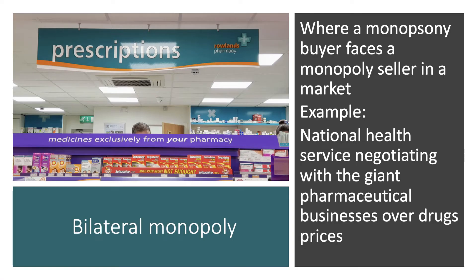First up, bilateral monopoly. This is where you have a monopsony firm — a firm with buying power in the market — facing up to a monopoly seller, a firm with selling power. It's called bilateral monopoly.